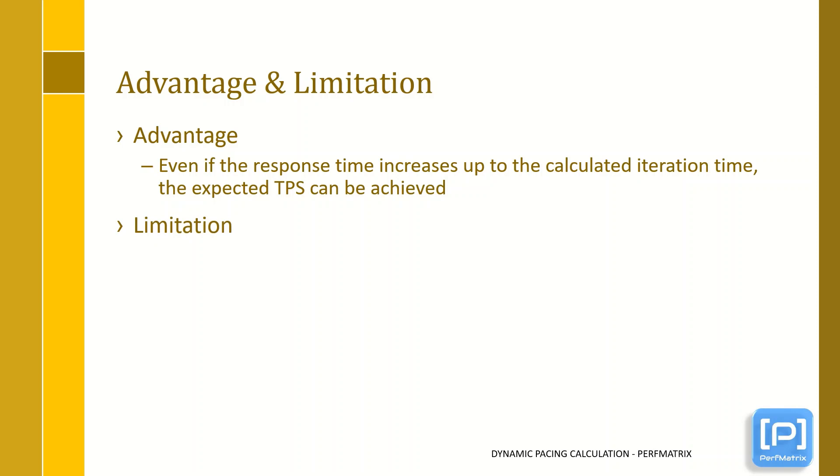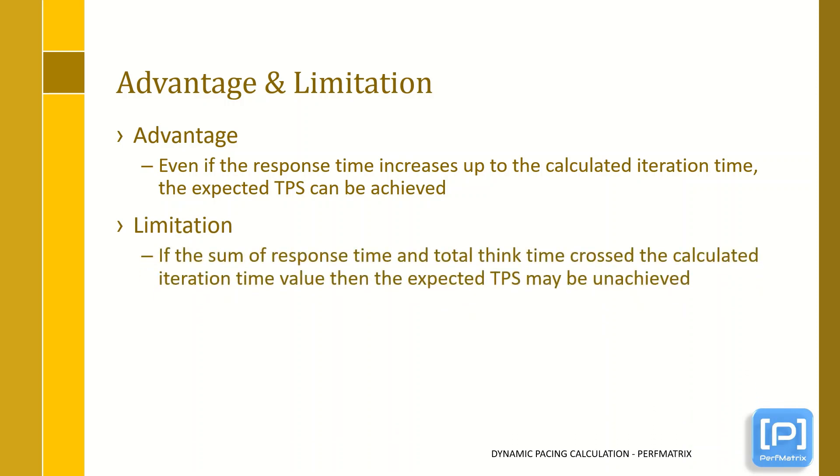The limitation of dynamic pacing is if the sum of response time and total think time crossed the calculated iteration time value, then the expected TPS may be unachieved. To avoid such a situation, you need to keep the two conditions in mind while calculating the pacing. These two conditions we have already discussed in this video.